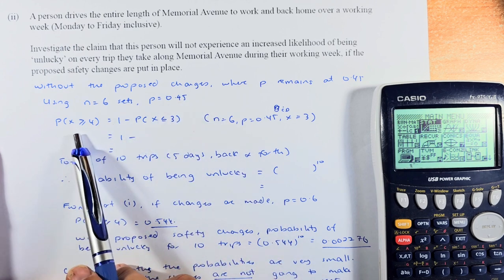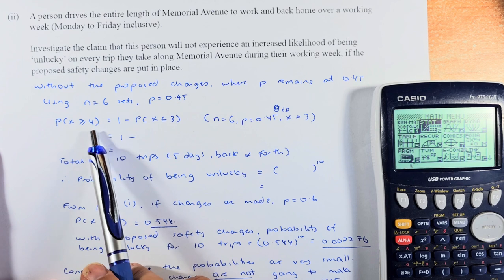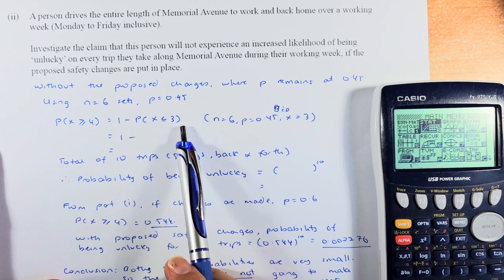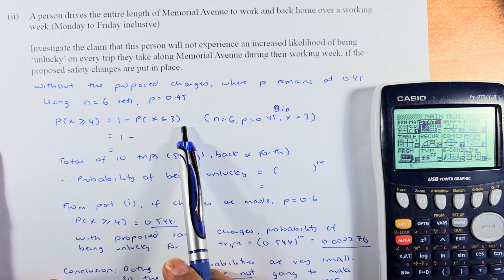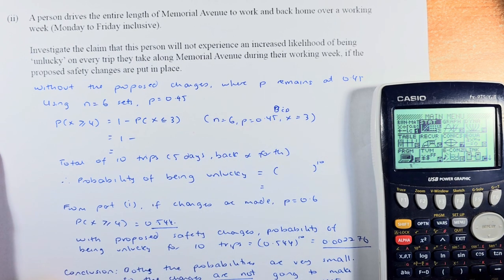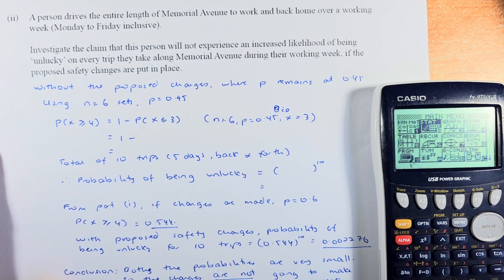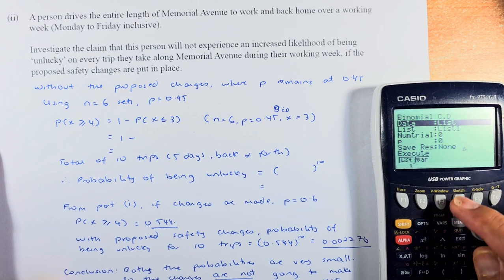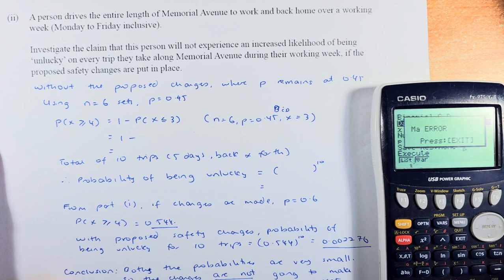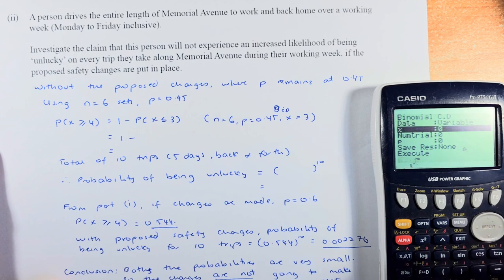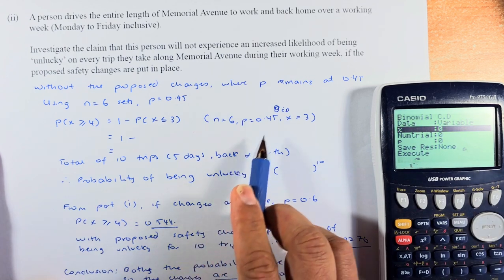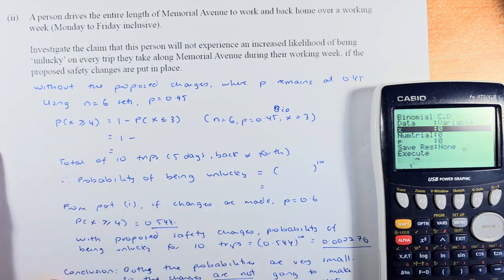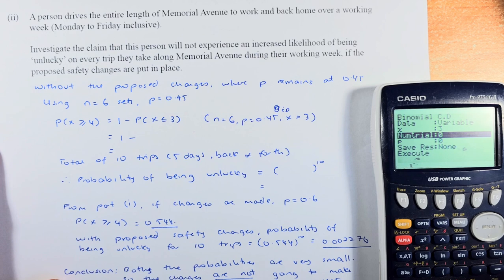We are going to calculate the same probability of X greater than 4 is going to be 1 minus probability of X less than 3. This time, without the changes, it's 0.45. We are going to do the same thing. Statistics, distribution, binomial, BCD. Variable. X is going to be 3, because we calculate 0 to 3.